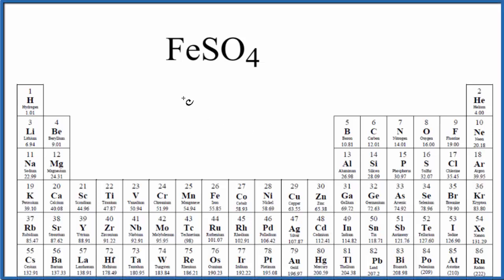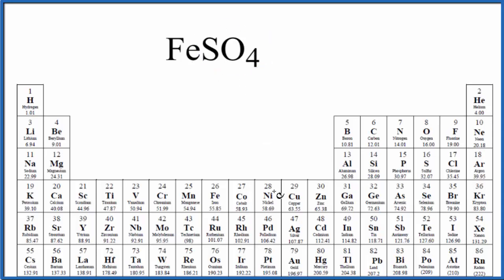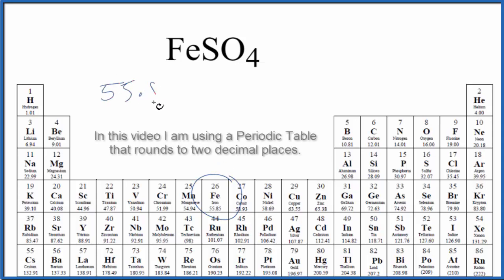In this video we'll calculate the molar mass for FeSO4. This is iron 2 sulfate. On the periodic table we have iron, which is 55.85 grams per mole. I won't write grams per mole each time right now — let's do that at the end.